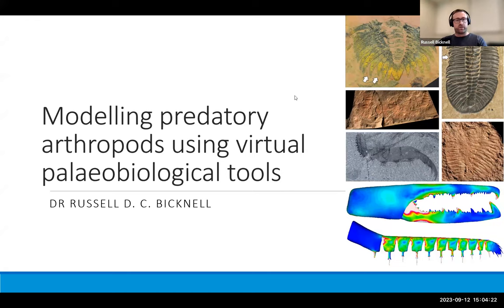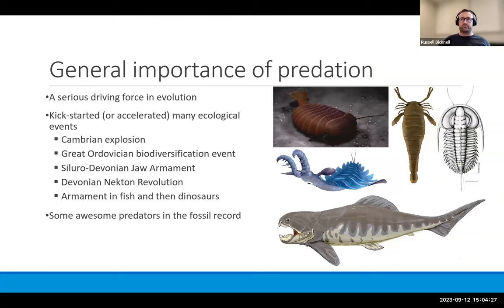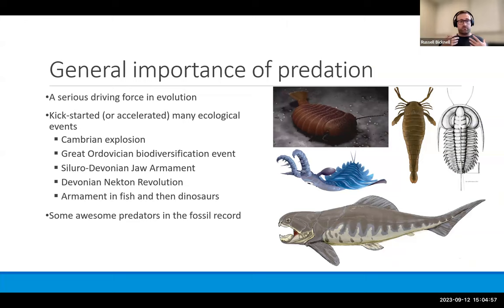Why do we care about predation? Predation is generally thought to be a pretty serious driver of evolution. The rise of different predator groups has been thought to have either kick-started or really accelerated an array of ecological events over deep time. This includes things like the Cambrian explosion, the Great Ordovician Biodiversification event, the Siluro-Devonian jaw armament, the rise of planktonic animals within the Devonian, the armament of fish, and into more recent Mesozoic dinosaurs.